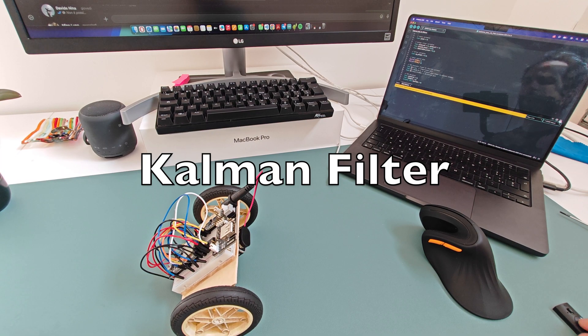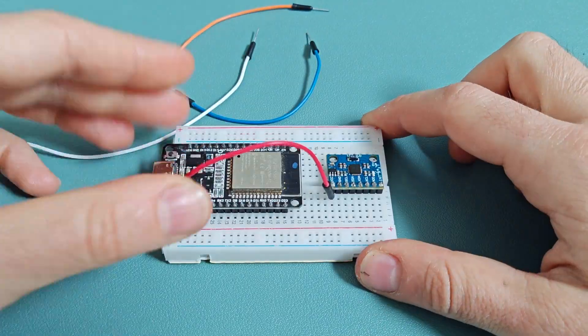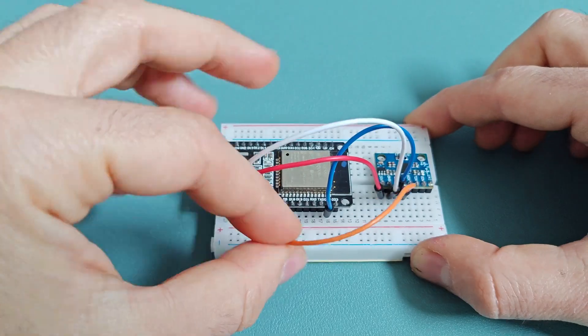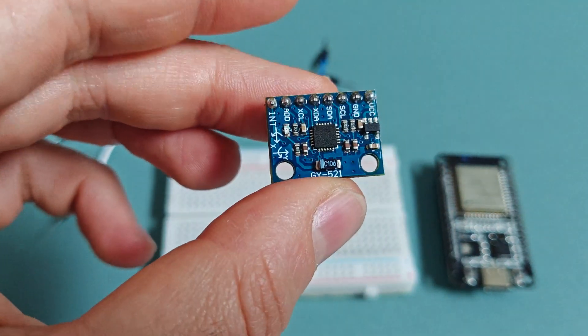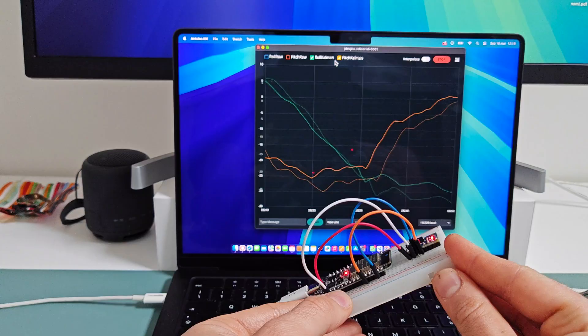Hello thinkers, in the last video, my human showed you how to connect an ESP32 with a gyroscope to measure orientation and mentioned that the key to high accuracy is the Kalman filter.